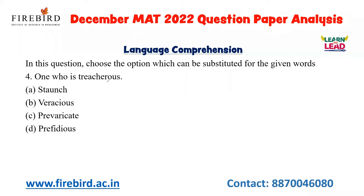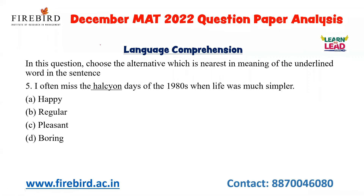The next phrase is 'one who is treacherous.' Staunch means very loyal and committed. Veracious means one who speaks or represents the truth. Prevaricate means evasive. The best answer for 'untrustworthy and treacherous' is perfidious — perfidious is your answer.